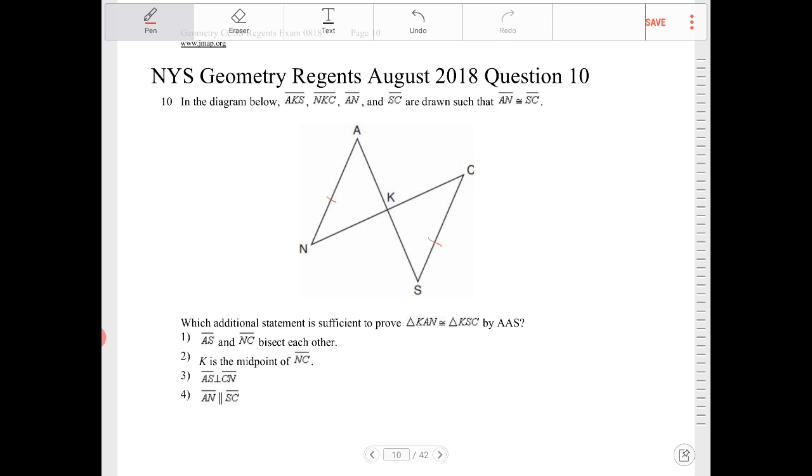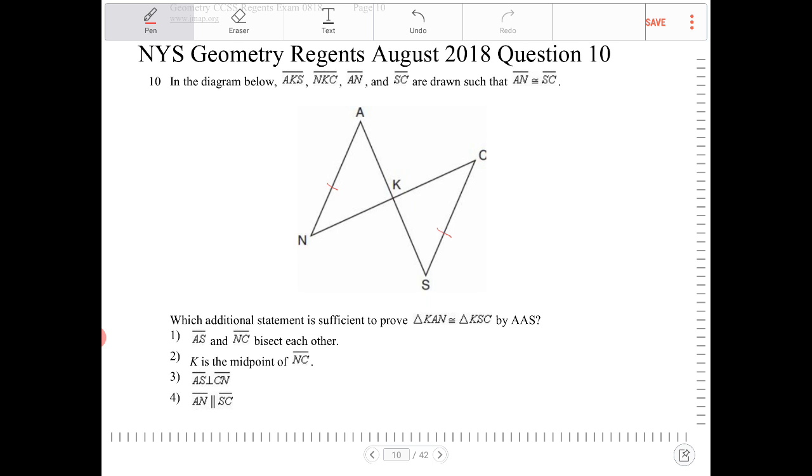Which additional information is sufficient to prove the two triangles congruent by AAS? So we can prove the two triangles congruent by AAS. Let's read through the answer choices.